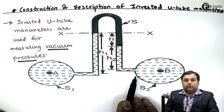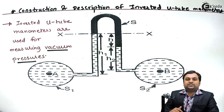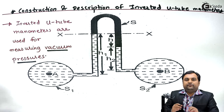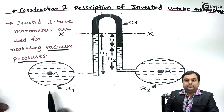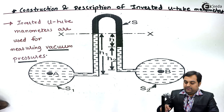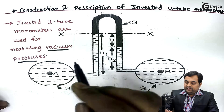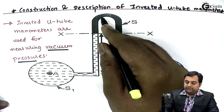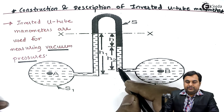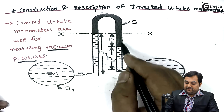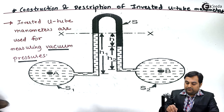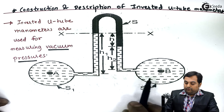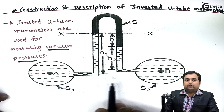As we can see here, we have two different pipelines: pipeline A and pipeline B. Both are containing a liquid which has pressure below atmospheric. So if we want to measure the pressure difference between two different pipelines, we can use the inverted U-tube manometer as shown in the diagram.